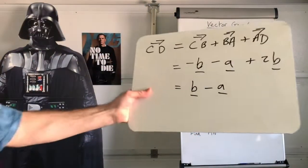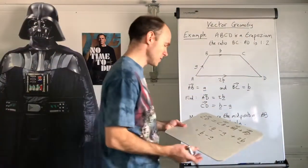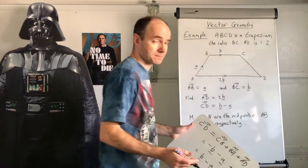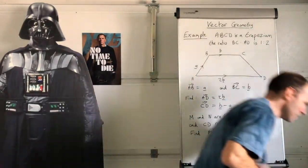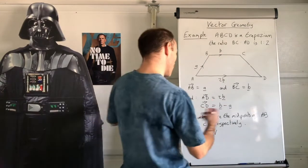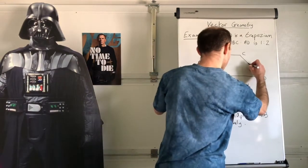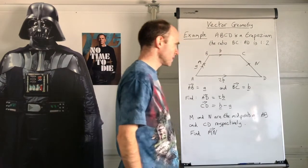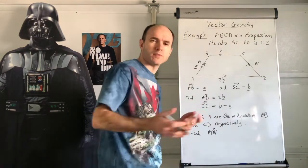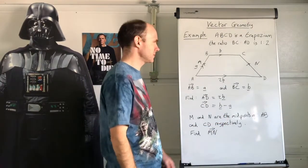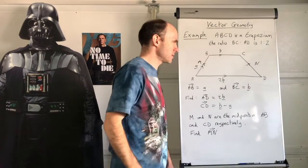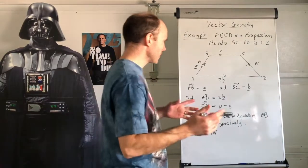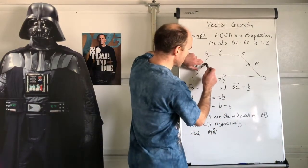So CD equals b minus a. Now let's find MN, where M and N are the midpoints of AB and CD respectively. You could have a guess — draw an imaginary line from M to N. What do you notice? You have a choice: go one way around or the other. Decide which is easiest.